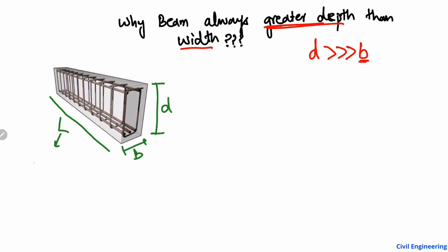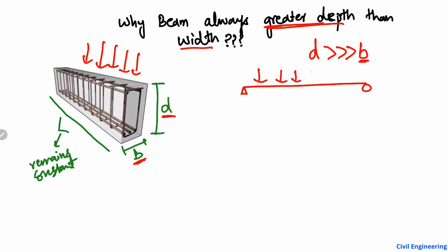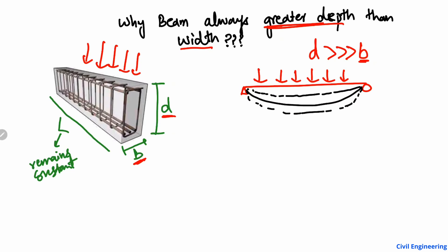If the length of the beam remains constant, what factors influence the capacity of the beam? Why do we always have a lower width and greater depth in structural engineering? If I consider a beam in a free body diagram and apply a load, it will bend. Higher resistance to loading means lower bending; lower resistance means more bending. There is a factor in the beam that affects this bending.